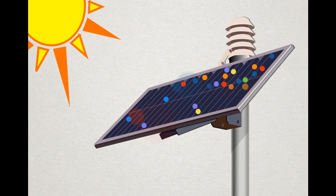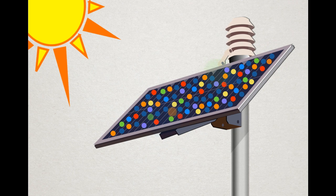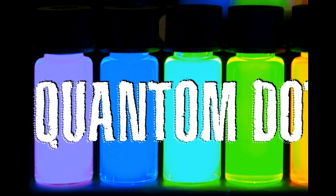Quantum dots are ideal for use in solar cells because they can be synthesized at a variety of different sizes fairly easily. Using many different sized semiconductor particles in the photocell means that it will be able to absorb energy from a greater portion of the light spectrum than current photocells.